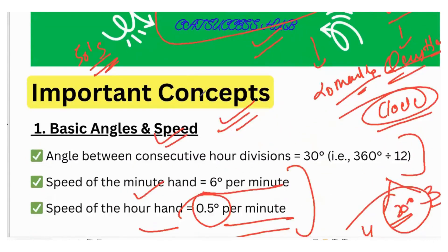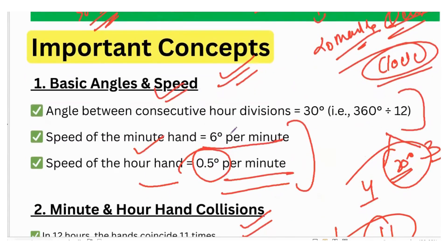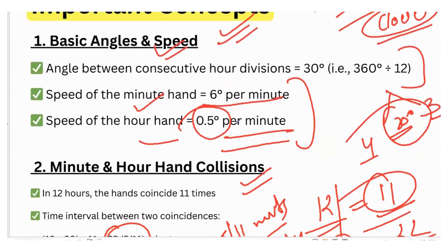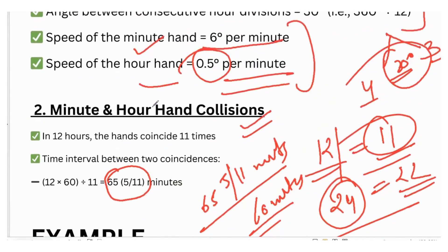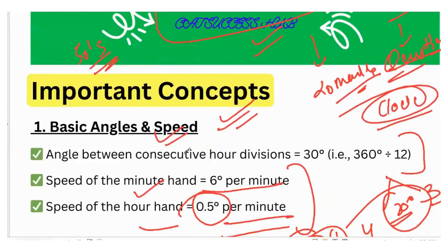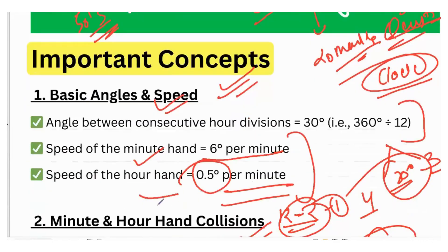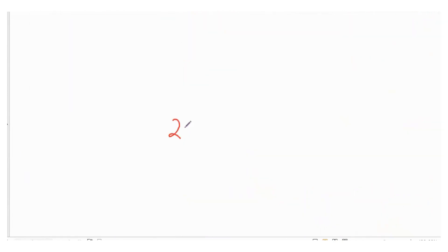To summarize, just remember: the angle between consecutive hour divisions is 30 degrees; speed of the minute hand is 6 degrees per minute; speed of the hour hand is 0.5 degrees per minute. In 12 hours, the minute and hour hand coincide 11 times; in 24 hours, 22 times. The exception is between 12 pm to 2 pm — they coincide only once. These two types of questions come frequently in clock problems.